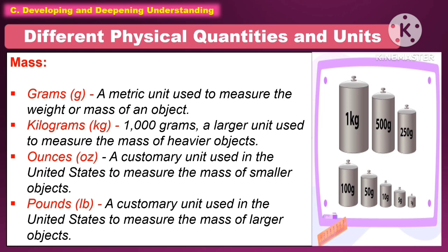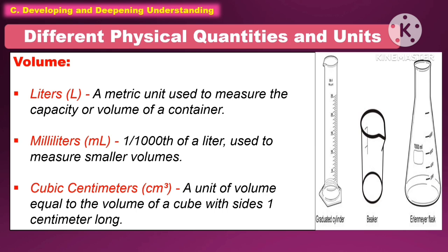Another physical quantity is mass. For units, we use grams, kilograms, ounces, and pounds. Grams is a metric unit used to measure the weight or mass of an object. Kilograms is 1,000 grams, a larger unit used to measure heavier objects. Ounces is a customary unit used in the United States to measure smaller objects. Pounds is a customary unit used in the United States to measure larger objects.